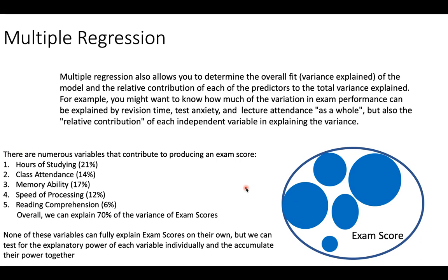The reason we can basically never explain all of the variance is because people are messy. Someone who normally gets a 90 on the exam might have gotten a 78 because their car broke down on the way to the exam and they were stressed out. I can't possibly capture that source of variability with any normal variables. Things happen, life is messy. We can build a conceptual model with bits and pieces of predictors that add up to a pretty good predictive ability, understanding how these variables work together to build a more robust explanation of our outcome.